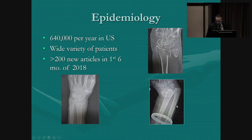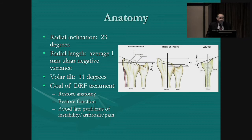The anatomy is familiar to everybody in the audience. There's 23 degrees of radial inclination. Ulnar variance averages about one millimeter negative ulnar variance, and a volar tilt of 11 degrees. The goal of treatment is to restore the anatomy if you can, and more importantly to restore function and to avoid late problems of instability, arthrosis, and pain.